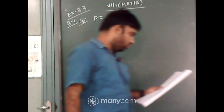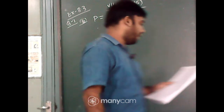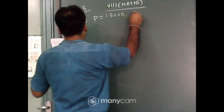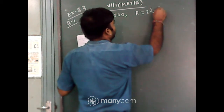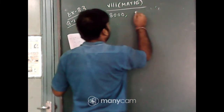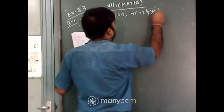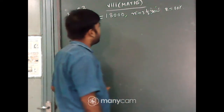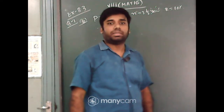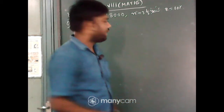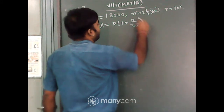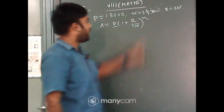The problem is: rupees 18,000 for 2 and a half years at the rate of 10% per annum. So principal P equals 18,000, time n equals 2 and a half years, and rate equals 10%. We have the formula for finding amount: A equals P into (1 plus r by 100) to the power n, where P is the principal, r is the rate of interest, and n is the time.